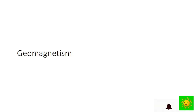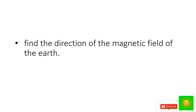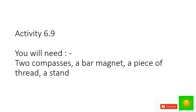When a compass is kept horizontally near the surface of the Earth, its needle turns along the north-south direction. Let's find the direction of the magnetic field of the Earth.